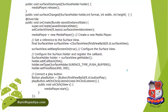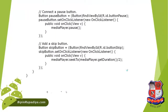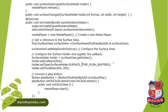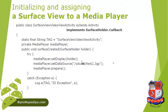When the user clicks the play or pause button, we call the appropriate player method to start or stop playback. When the user clicks the Skip button, we call mediaPlayer.getDuration() to get the total duration of the video, divide it by two, and use seekTo() to jump to the halfway point of the video. That covers the onCreate() method implementation.